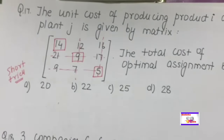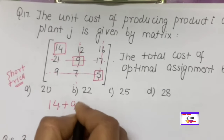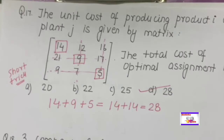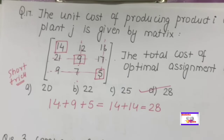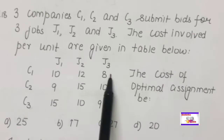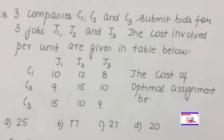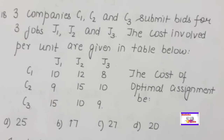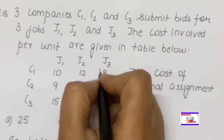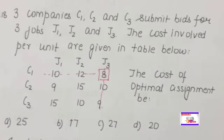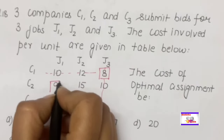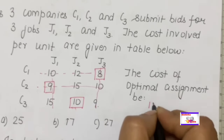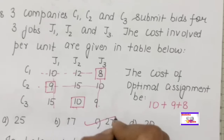After eliminating assigned rows and columns, we are left with costs 14, 8, 9, and 10. Assigning: 8 (mark, eliminate row/column), then 9, then 10. The optimal total cost = 10 + 9 + 8 + 5 = 27. Wait — adding the assigned values: 5 + 8 + 9 + 10 = 32. Correct answer using the short trick: 10 + 9 + 8 = 27. So 27 is the answer.